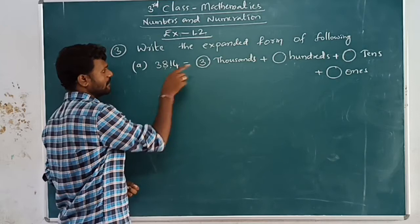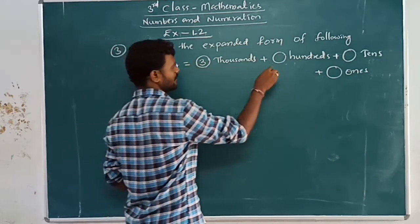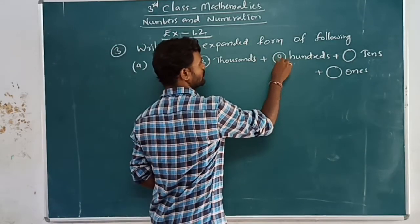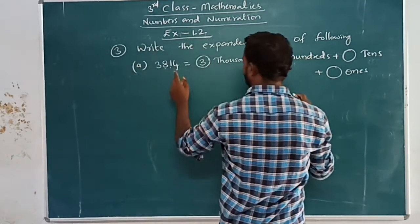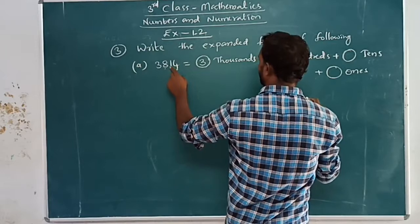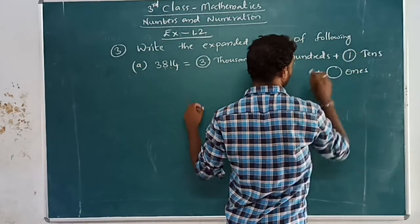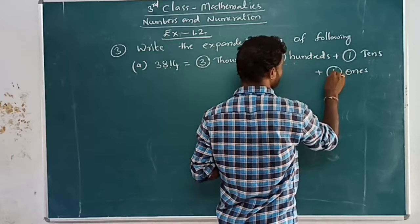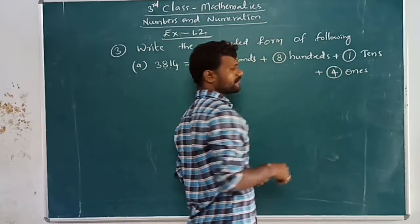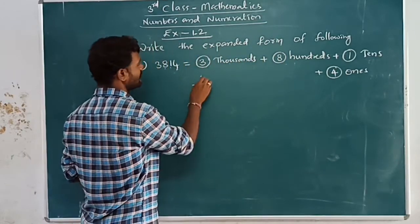Next, hundreds — which is in hundreds place? Eight. So eight hundreds. Plus one tens — one is in tens place. Next, four is in ones place, so four ones.